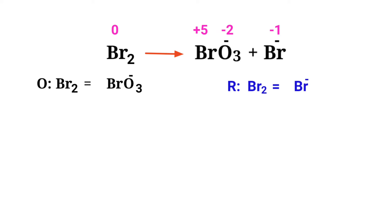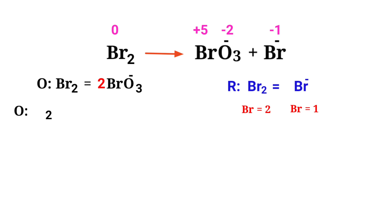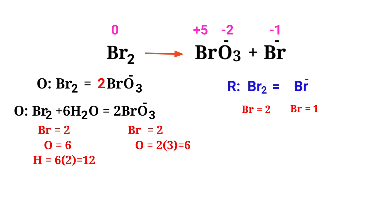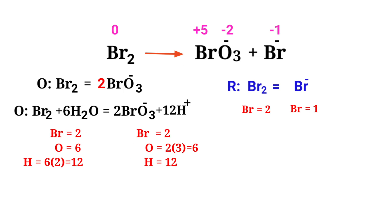Now balance the number of atoms in the two half reactions. In the oxidation half reaction, to balance the Bromine atoms, we need to put a coefficient of 2 in front of BrO₃⁻. The Bromine atoms are now balanced. Next, balance the Oxygen atoms by producing water molecules, and then balance Hydrogen using H⁺ ions.